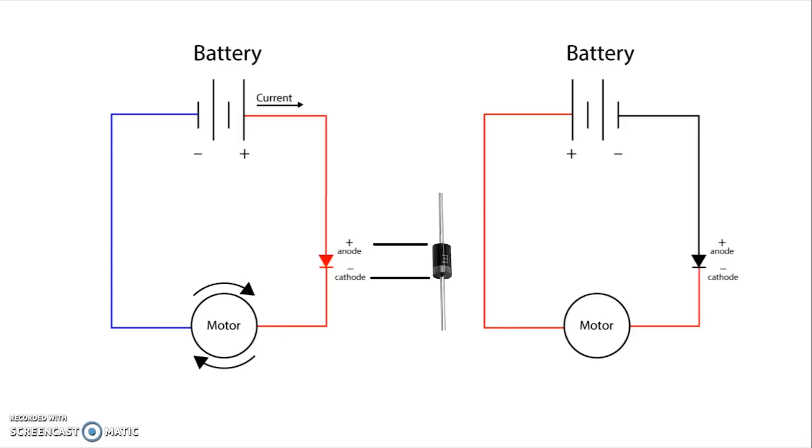So a diode is essentially like a one-way valve for electricity. It allows the current to flow in one direction. So it actually looks kind of like an arrow with a line and the side with the line is the negative side which is called the cathode and the other side is the positive side that's called the anode. And usually you don't see these labels when you're looking at diagrams but I wanted to familiarize you with that a little bit. And so the current is going to flow in the arrow direction on a diode and if current tries to flow in the opposite direction it won't let it, it'll stop it.